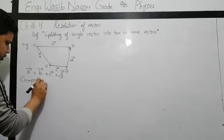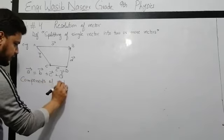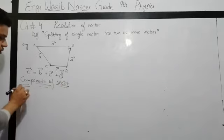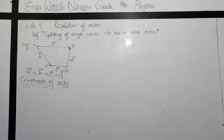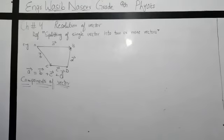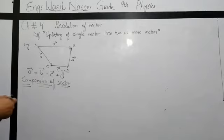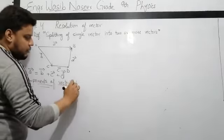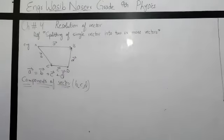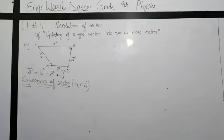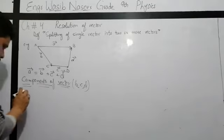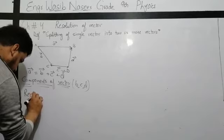Next we have: components of vector. I will dictate the definition. The new vectors which are obtained as a result of resolution are called components of vector. In the above example, the components of the single vector A are B, C, and D. Among component types, there is a special type called rectangular component.